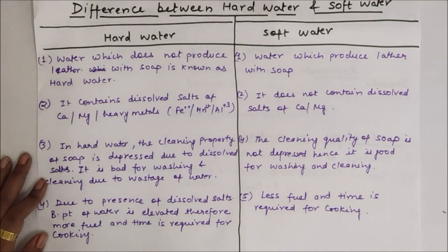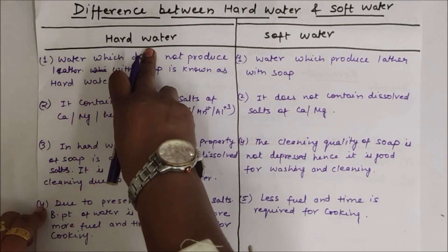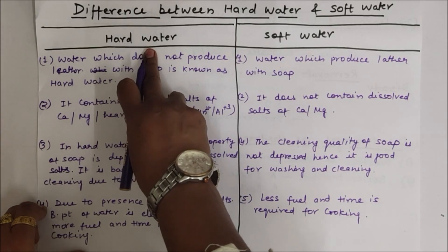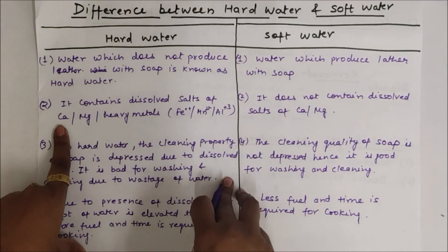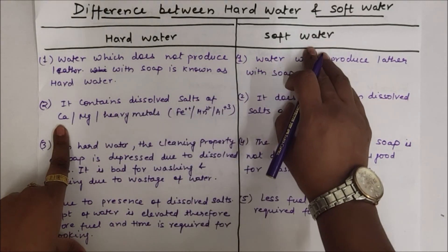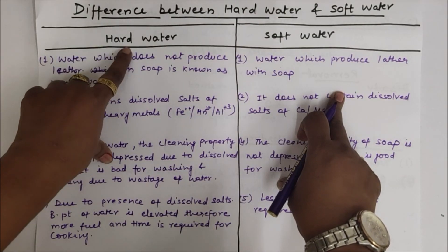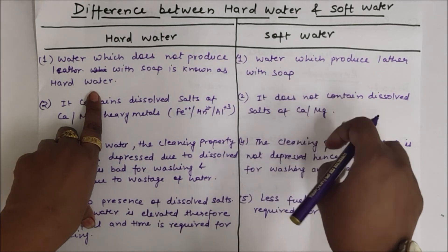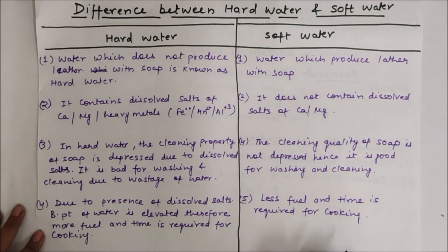So this is the difference between hard water and soft water. Hard water has dissolved salts present, and this property is called hardness. Hard water is not suitable for cleaning, washing, and cooking. Thank you.